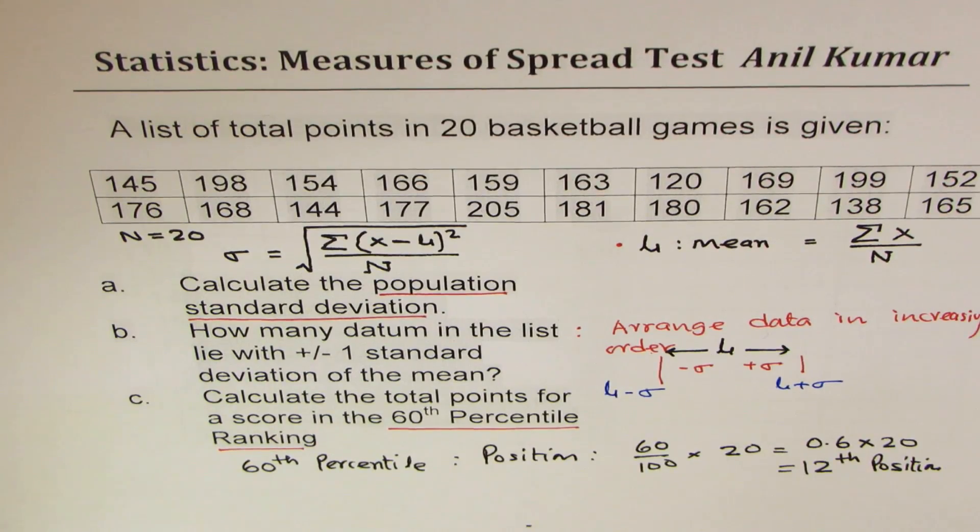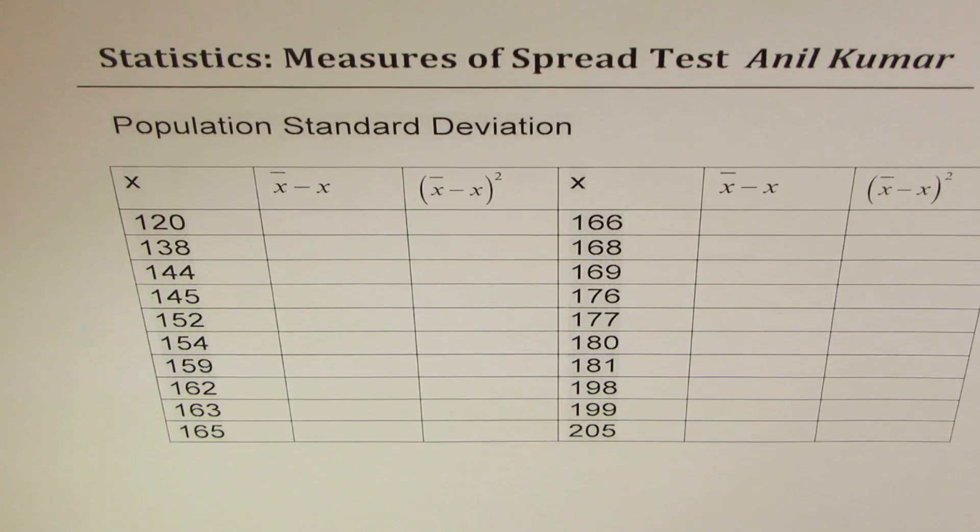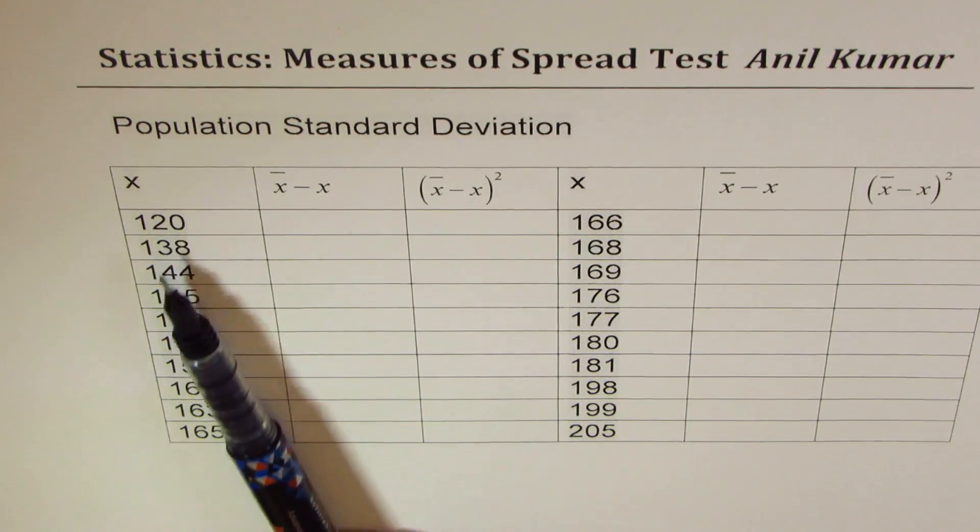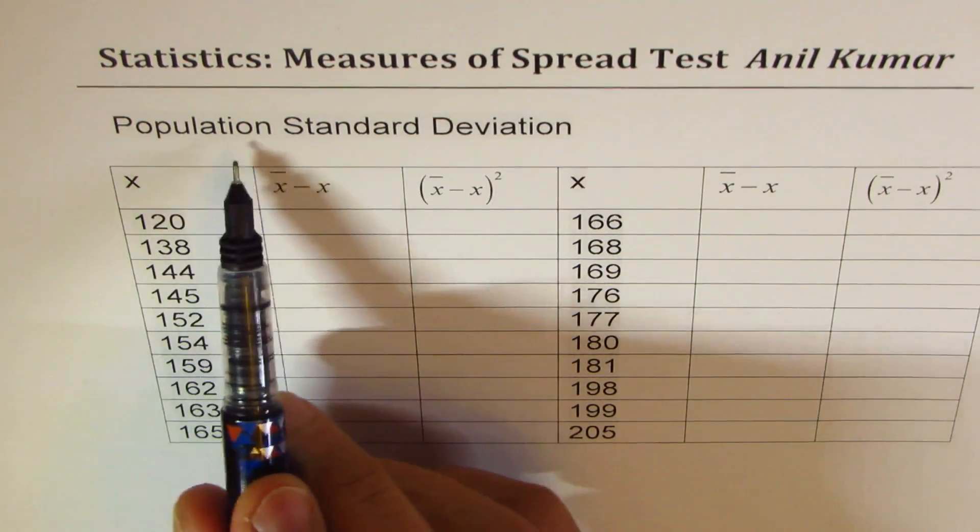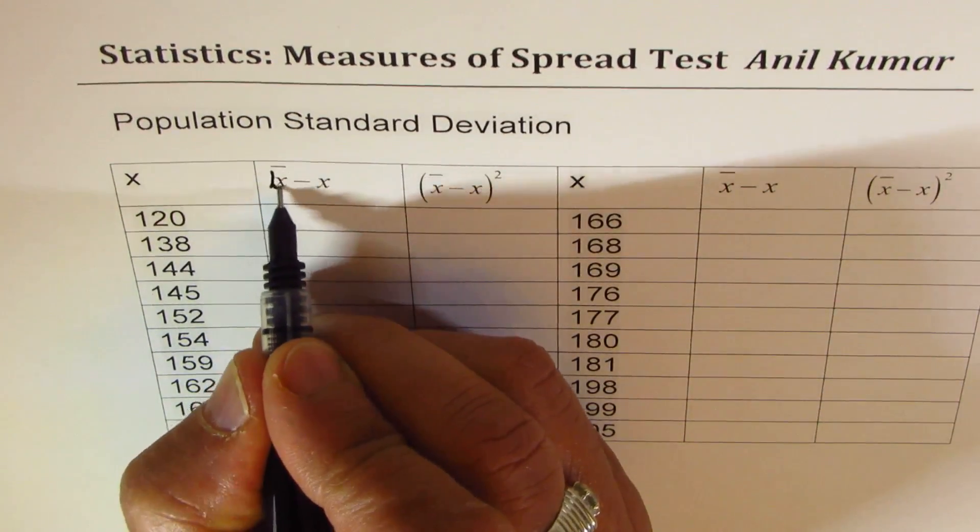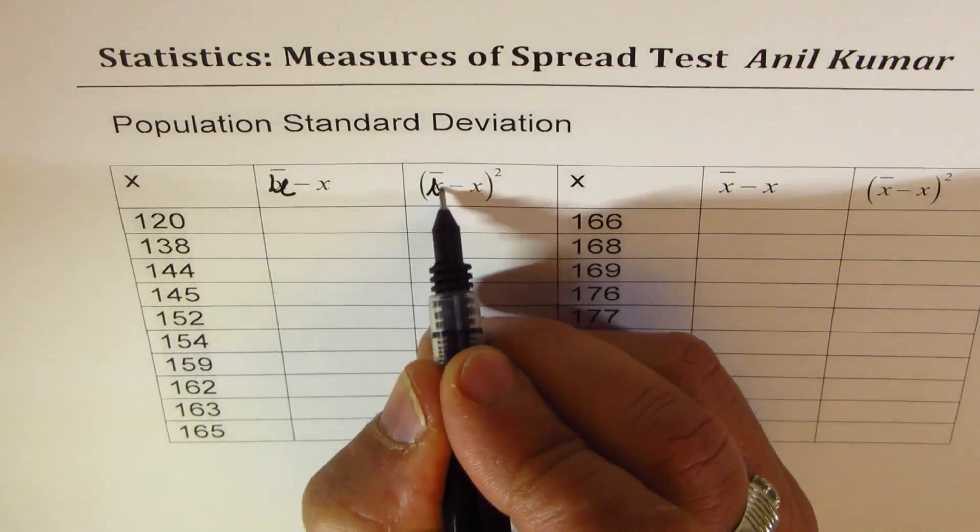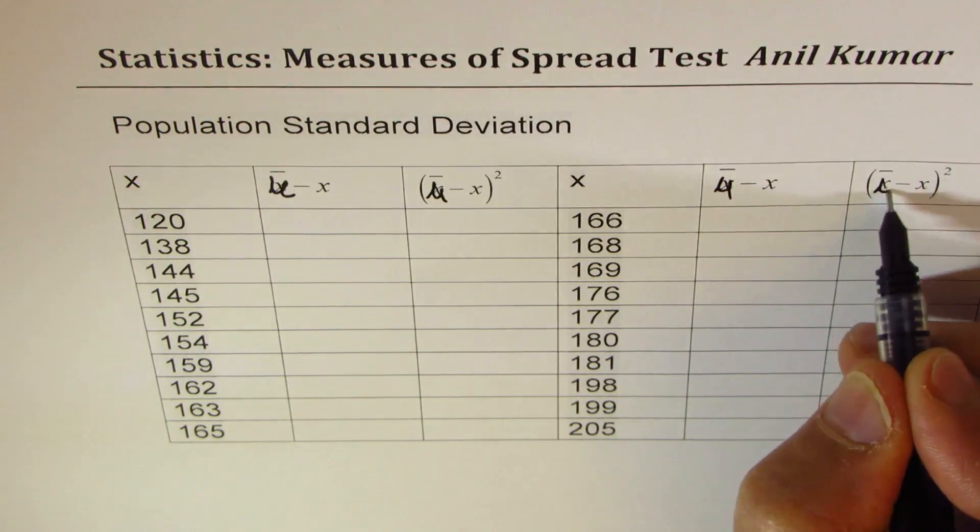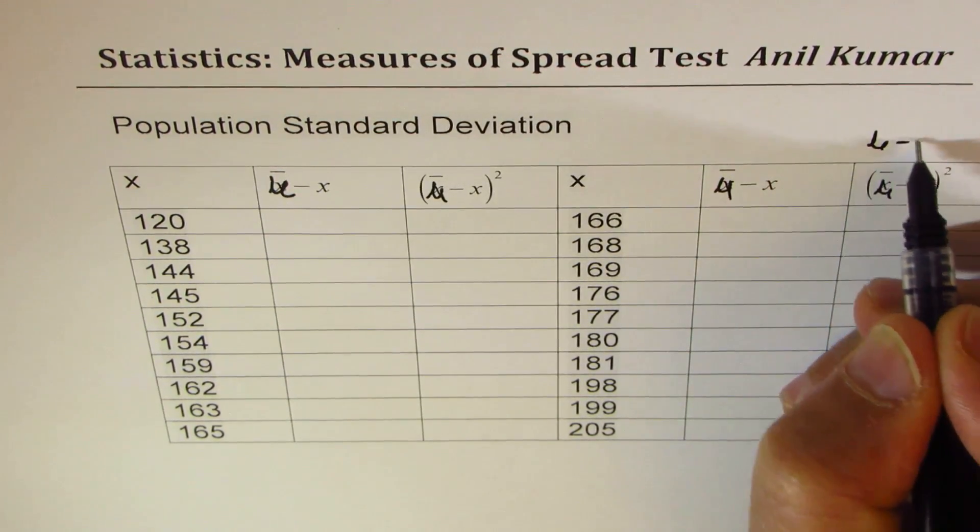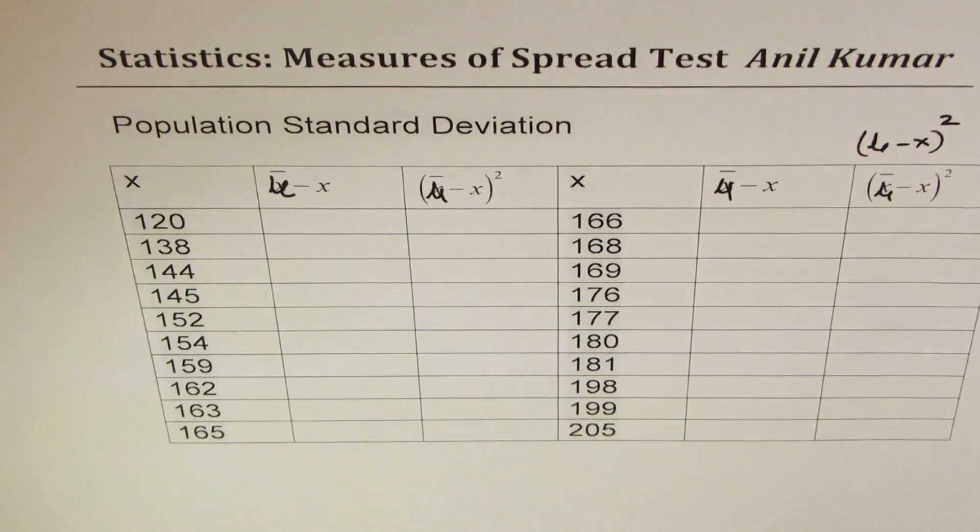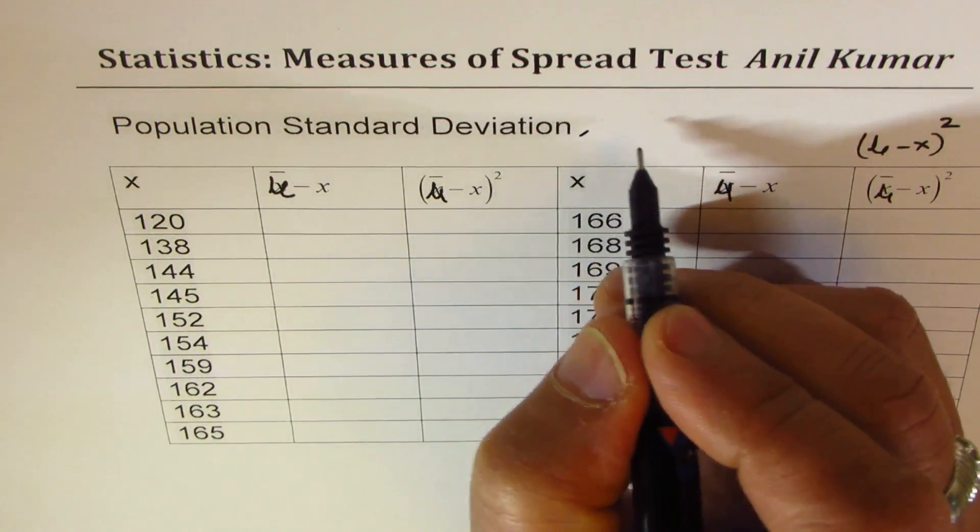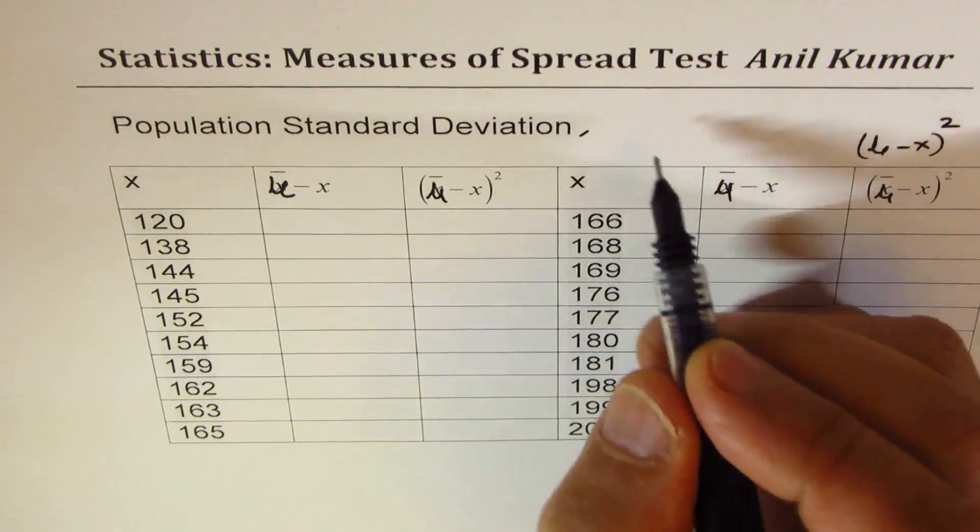To save time, I've already copied this data in form of a table. Since you can only see half of my page, I have two columns - these are 20 data elements, 10 here and 10 there. Now, since we're talking about population, I should use mu here. So I'm changing x bar to mu. It's saying mu minus x whole square. Because we're talking about population where we know N is equal to 20.